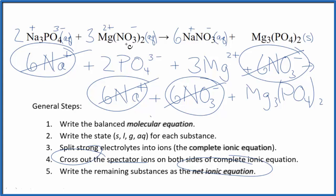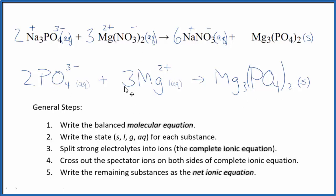Let me clean it up and write the states, we'll have our net ionic equation. So this is the balanced net ionic equation for sodium phosphate plus magnesium nitrate.